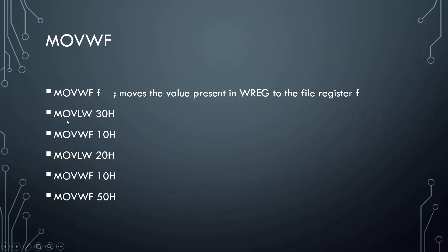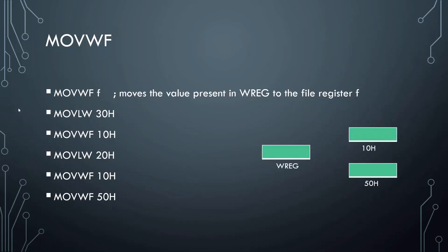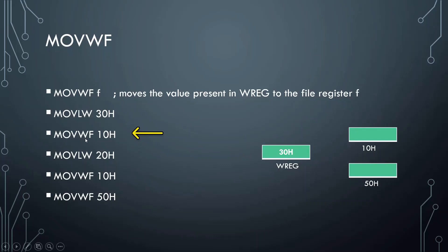Considering the sample code: MOVLW 30h. This is used to move the value 30h, which is a hexadecimal value, to the working register. Then MOVWF 10h — here 10h is not a literal value, it corresponds to the address of a file register. So this instruction copies whatever value is present in the working register to the file register whose address is 10h.